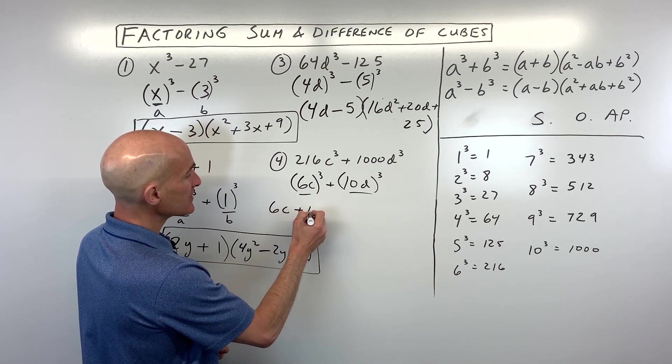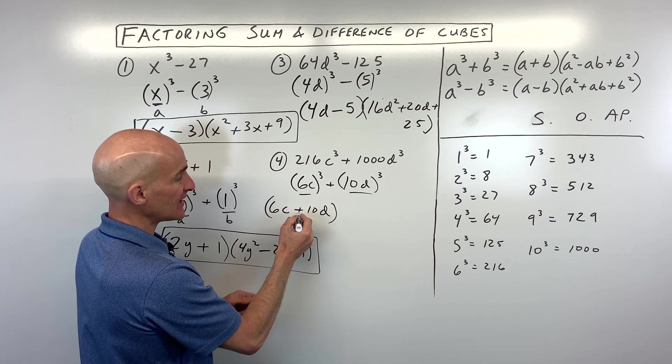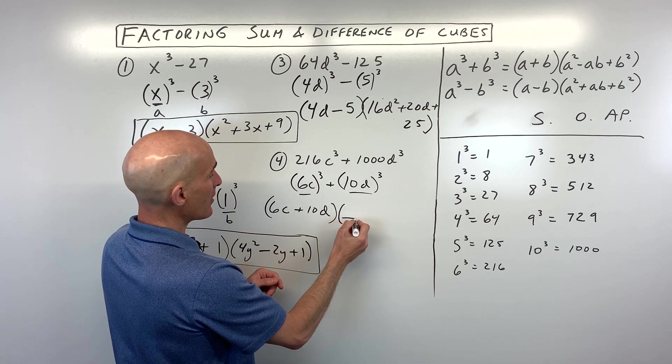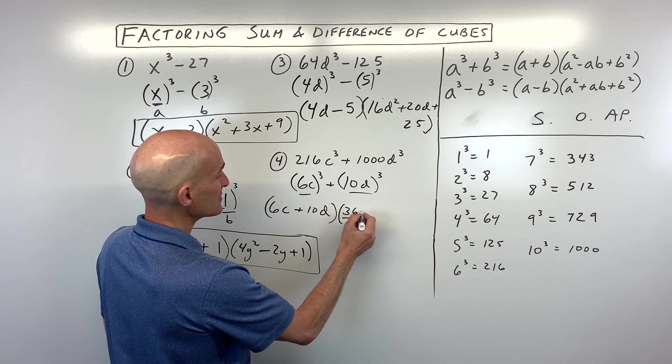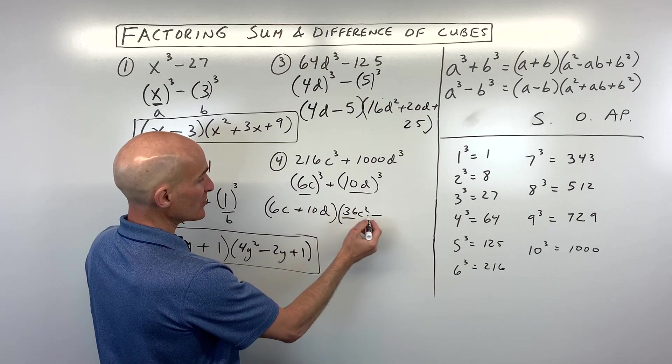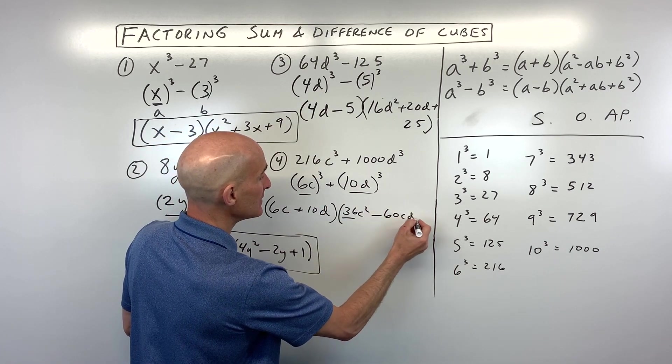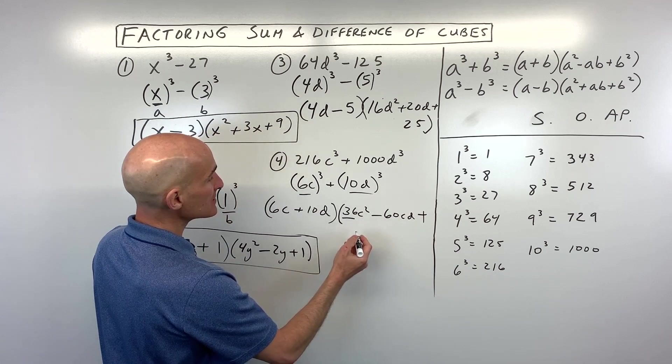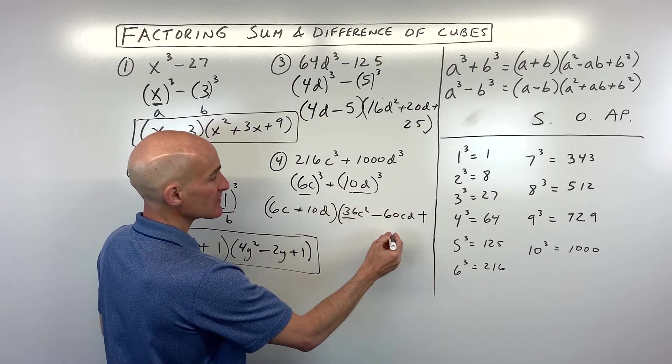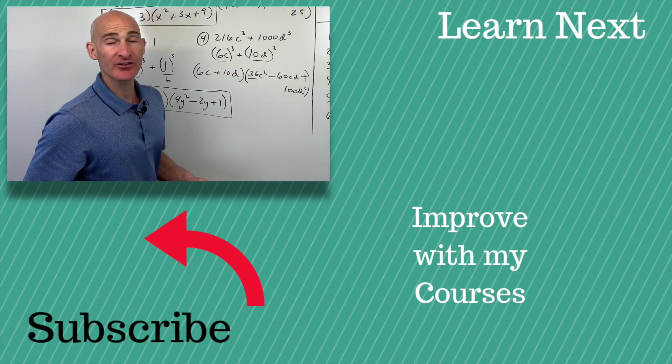See this is adding, so we're adding, that's the same. Then we've got a², which is going to be 6c times 6c. That's 36c². And then the opposite. So if we're adding, we subtract. That's going to be a times b. That's 60cd. And the last one's always positive. That's going to be b², 10d times 10d, which is 100d². And you've got it fully factored.